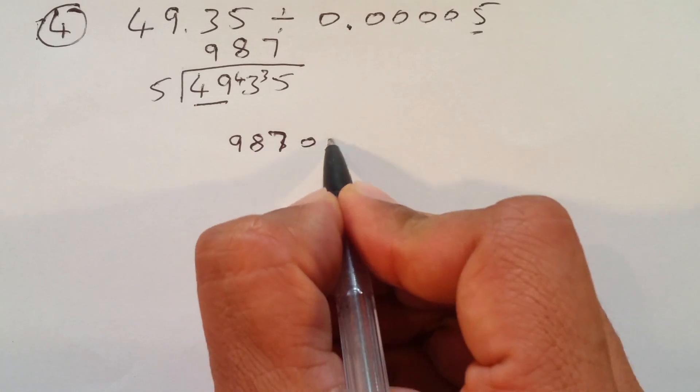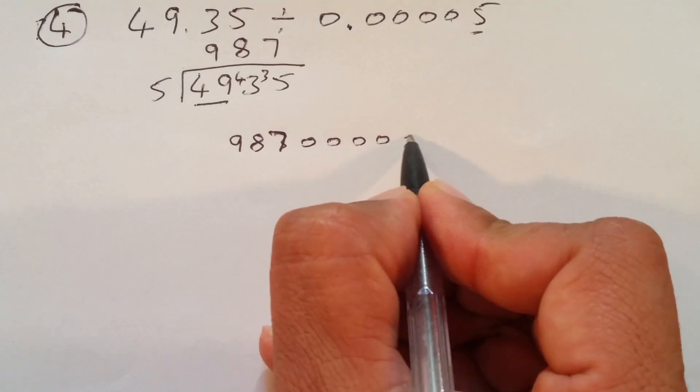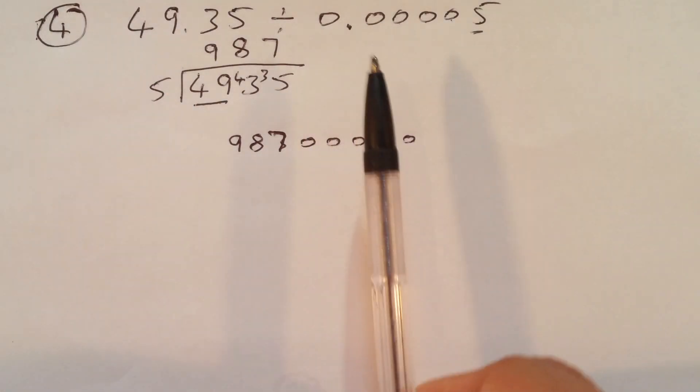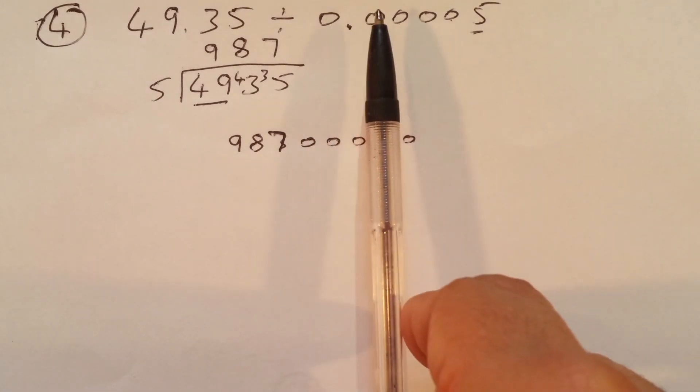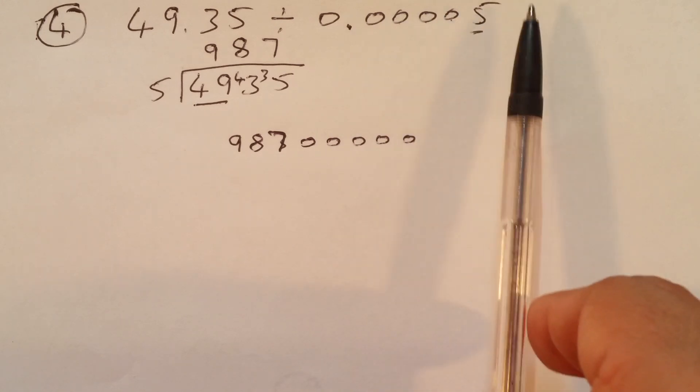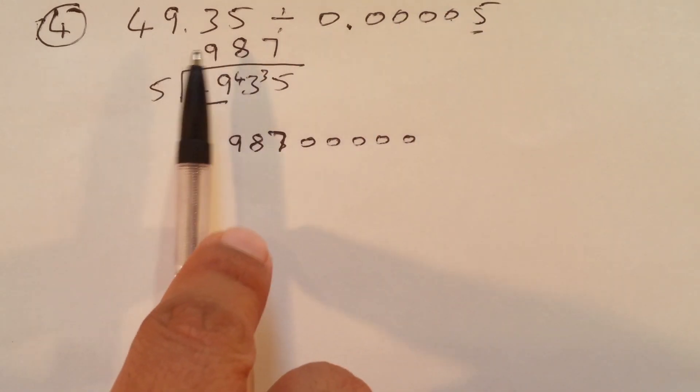Add that in the 0s. 1, 2, 3, 4, 5. I repeat on your right hand side. After decimal, how many numbers you have? 1, 2, 3, 4, 5.